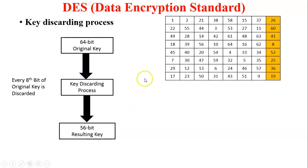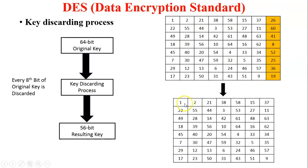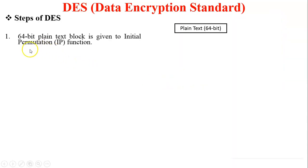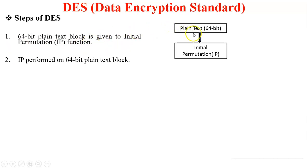For example, in this table you can see the 64-bit original key converted into a 56-bit resulting key — every 8th bit is discarded from the original key. Now the steps of DES. The first step: a 64-bit plain text block is given to the Initial Permutation IP function. Then plain text input undergoes initial permutation.